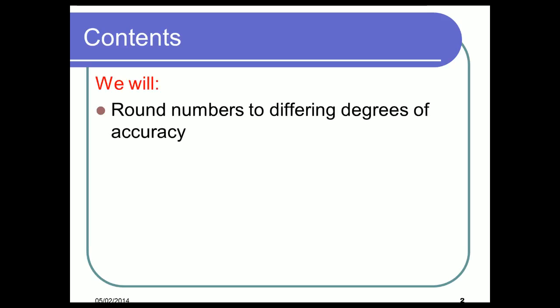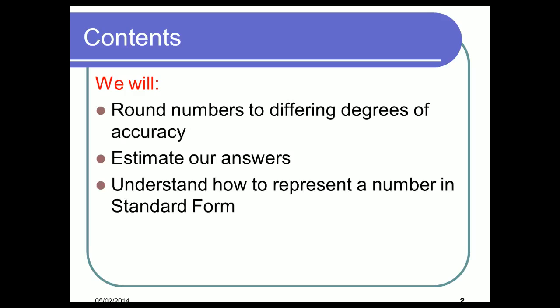So the objectives for today: we're going to round numbers to different degrees of accuracy. I'm going to show you two different methods for doing it and you'll be very confident by the end of it. We will then use this to estimate our answers. We'll also understand how to represent a number in standard form and indeed why standard form even has to exist. And last but not least we're going to calculate with standard form, including how to use your calculator with it.